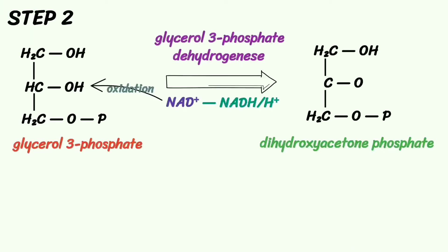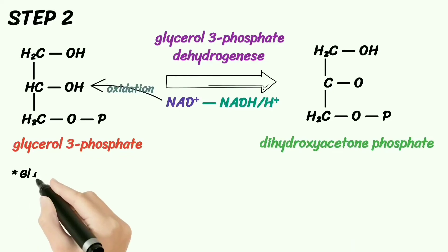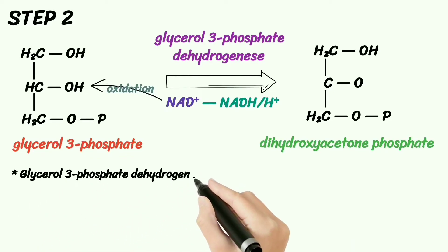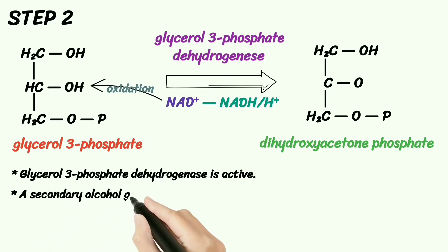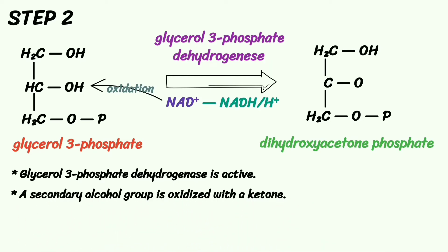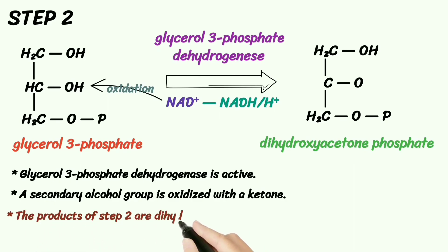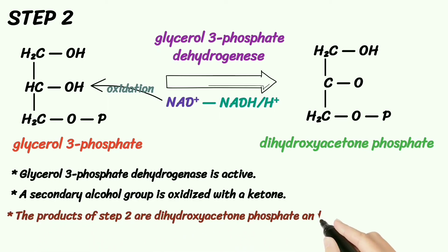To recap, these are the key points in step 2: glycerol-3-phosphate dehydrogenase is active, a secondary alcohol group is oxidized with a ketone, and the products of step 2 are dihydroxyacetone phosphate and nicotinamide adenine dinucleotide plus a free hydrogen ion.